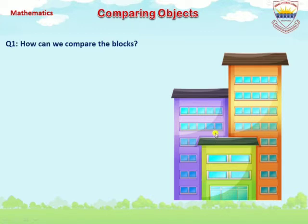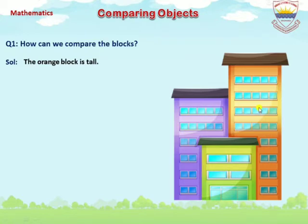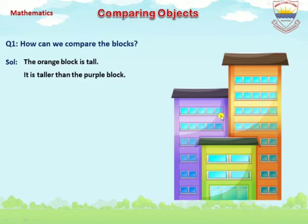Solution: The orange block is tall. The orange block is taller than the other blocks. In the picture, it is taller than the purple block. As you see, the orange block is taller than the purple block.